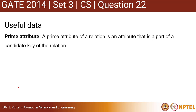So first, what is a prime attribute? A prime attribute of a relation is an attribute that is a part of a candidate key. Typically, it could be part of any candidate key of a given relation.